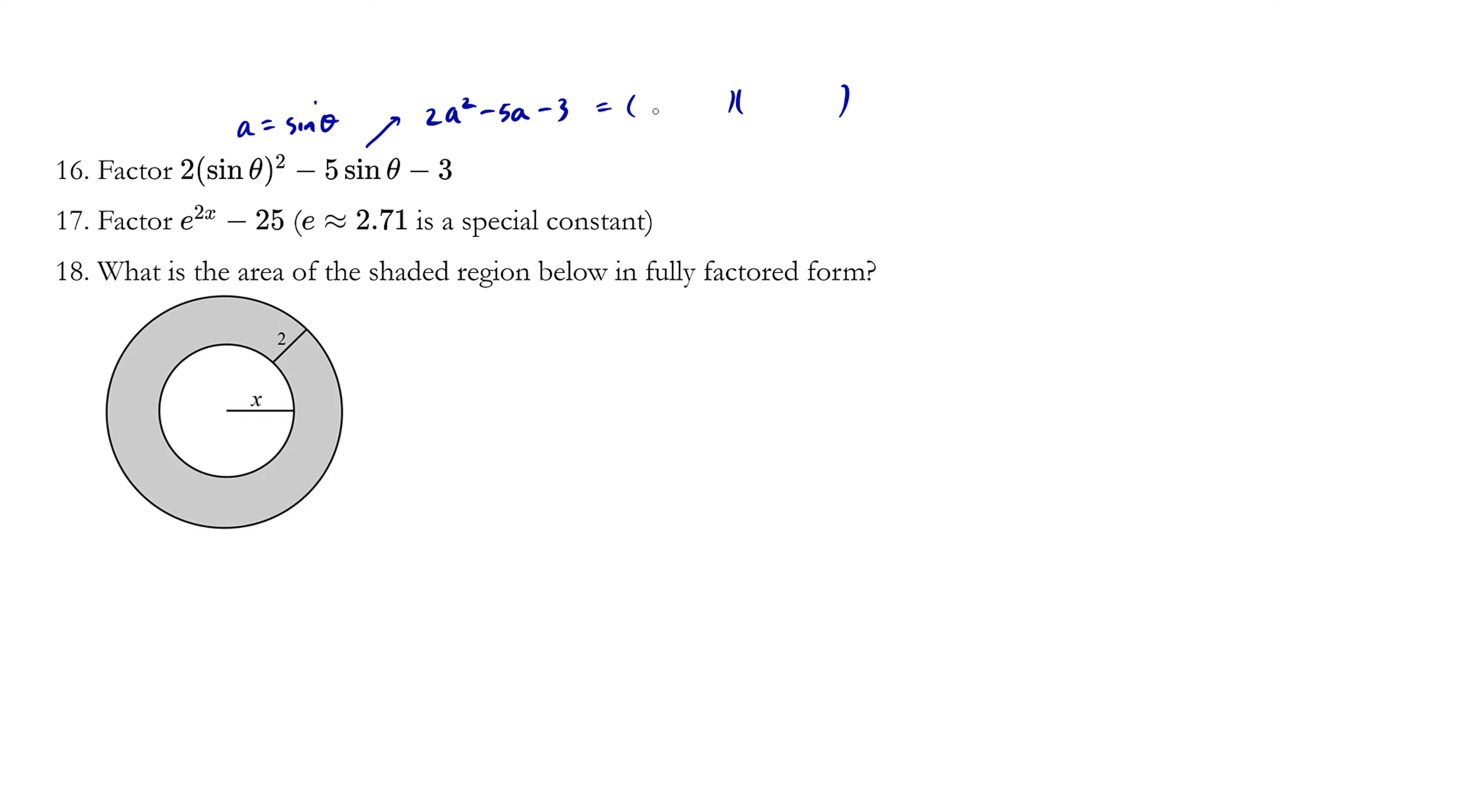We haven't done the rainbow method for a while, so why don't we try to just use it again? Since we could guess and check, but let's just try this. So 2 times -3 is -6. We're not going to write equals - this is not really equals, this is just a trick.